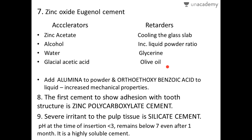If we add alumina to the powder and ortho-ethoxybenzoic acid to the liquid, it increases the mechanical properties of the ZOE cement, as ZOE cement has decreased mechanical properties and lower strength and resistance. By adding alumina to the powder and ortho-ethoxybenzoic acid to the liquid, we can increase those mechanical properties.